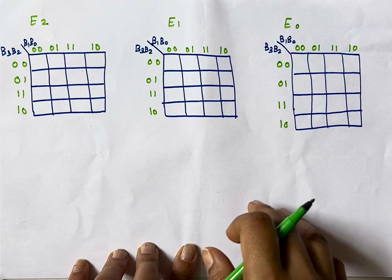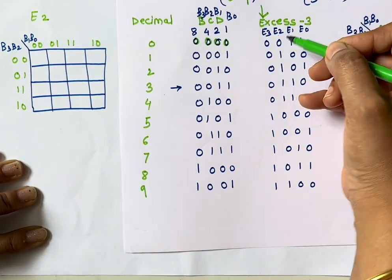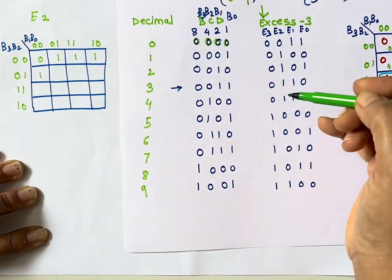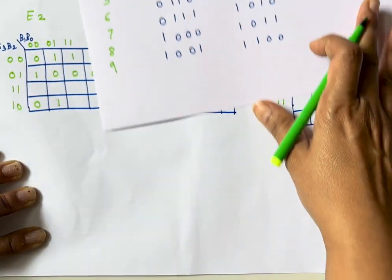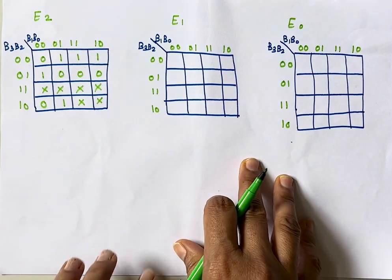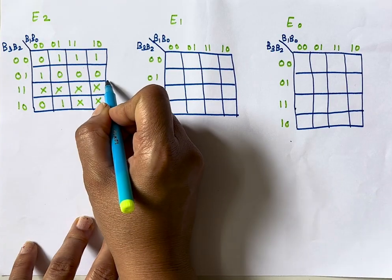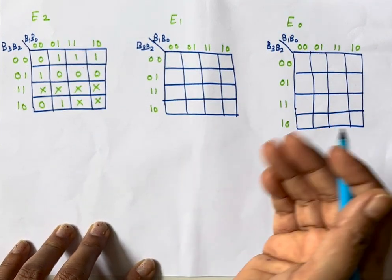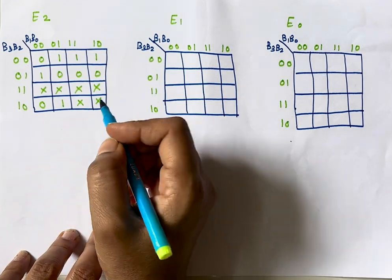Similarly, we find equations for E2, E1, and E0. For E2, the K-map values are: 0 four times, then 1, 0, 1, 1, 1, 1, then four zeros, then a 1, and the remaining cells are don't cares. Understanding K-map grouping is very important — on this channel there are videos showing grouping of ones and zeros for Sum of Products and Product of Sums forms.